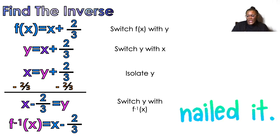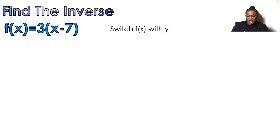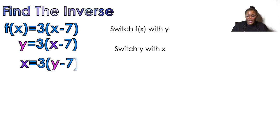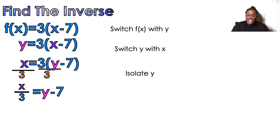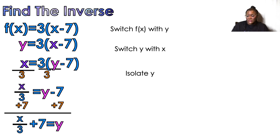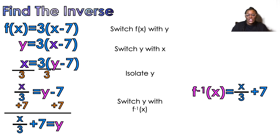Example three: f(x) = 3(x − 7). Switch f(x) with y: y = 3(x − 7). Switch y with x: x = 3(y − 7). Isolate y — first divide both sides by 3 to get x/3 = y − 7, then add 7 to both sides: x/3 + 7 = y. Use inverse notation: f⁻¹(x) = x/3 + 7.